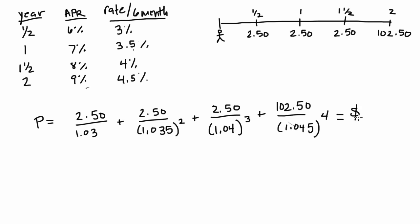So when we plug this all in our calculator, we get the price of this pattern of cash flows as $92.96.